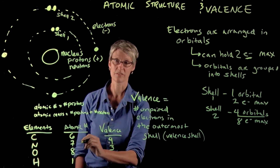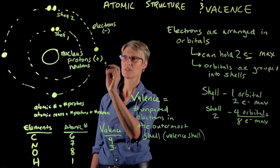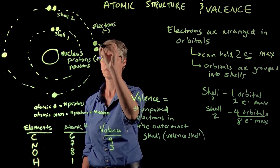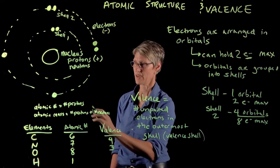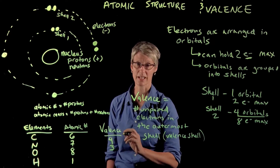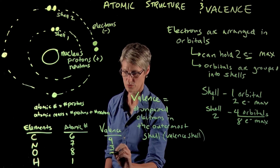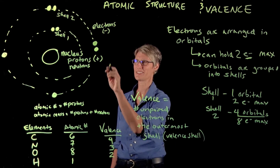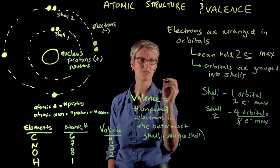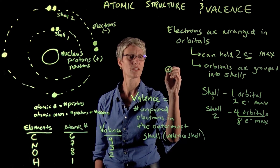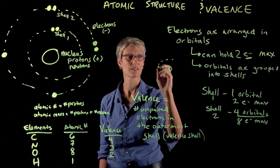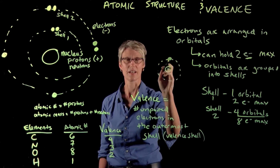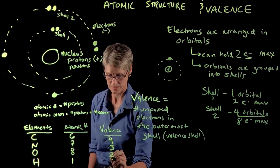Oxygen has an atomic number of eight, so it has one additional electron over nitrogen, filling another orbital. Now oxygen has two unpaired electrons, so it has a valence of two. And finally, little hydrogen, which has a single proton in its nucleus and a single electron in shell 1. It has one unpaired electron, so it has a valence of one.